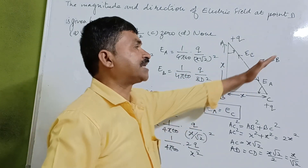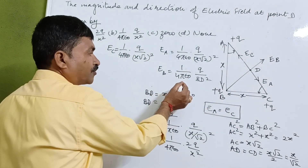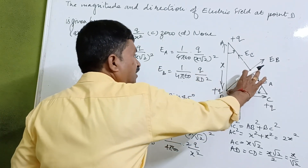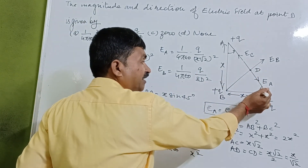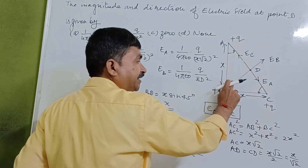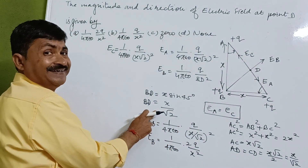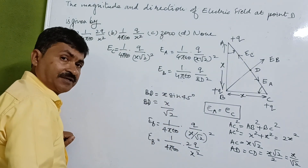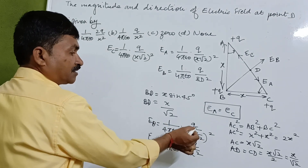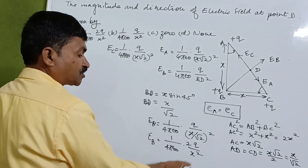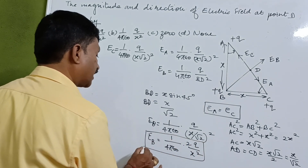Only the electric field acting because of B remains. EB is equal to 1 upon 4 pi epsilon naught into Q upon BD squared. Now if we calculate BD, this angle is 45 degrees, and BD equals X sine 45, which is X upon root 2. Substituting the value, EB becomes 2Q upon X squared. This is the electric field we are getting.